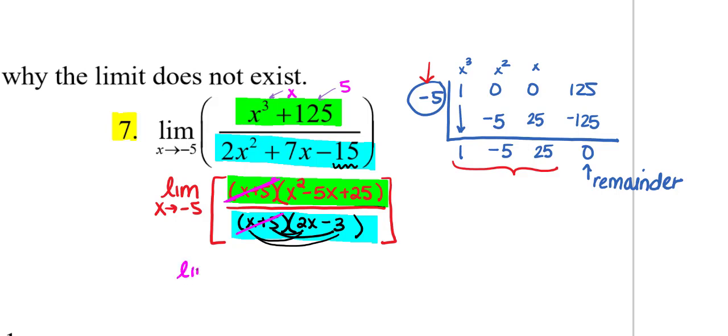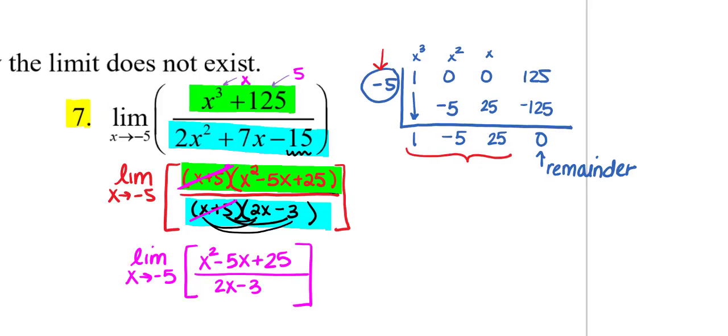Now I can see that I have factored this rational expression completely, and I can see that I have the common factors here of x plus 5. If I rewrite this again, don't forget, just copy down that limit expression. Our simplified rational expression would be x squared minus 5x plus 25 all over the binomial 2x minus 3. That's what we would be now working with.